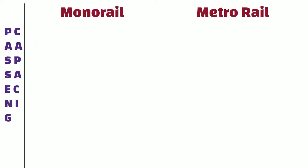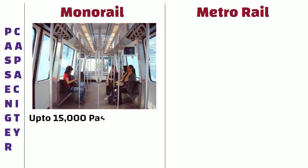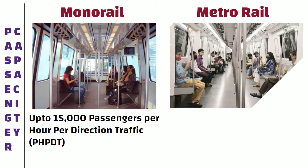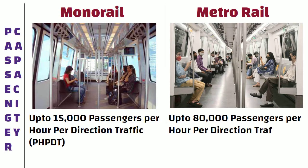Passenger capacity. Monorail can carry up to 15,000 passengers per hour per direction. On the other hand, Metrorail can carry up to 80,000 passengers per hour per direction.